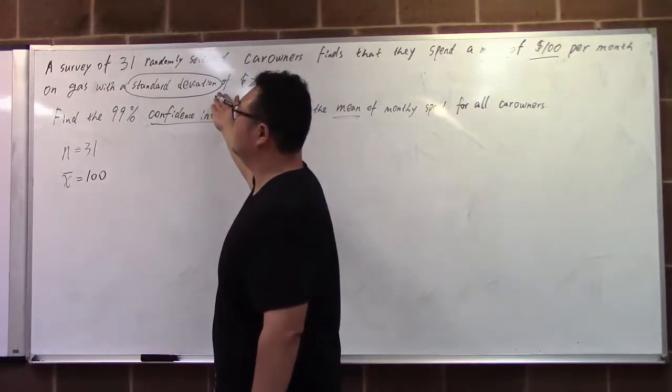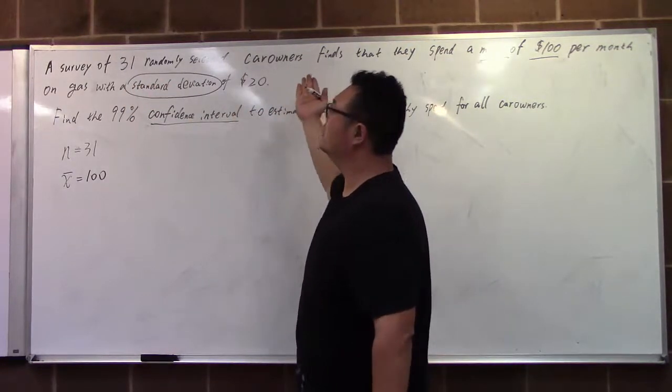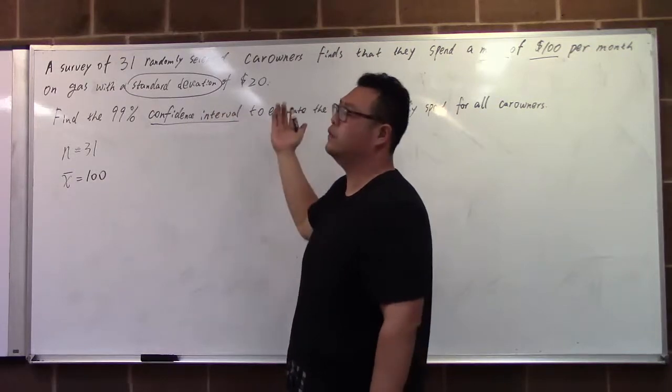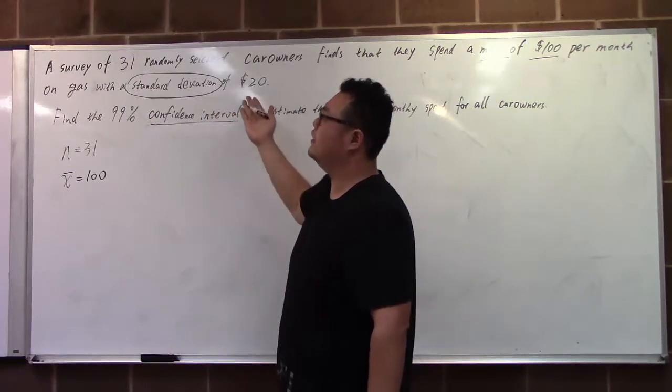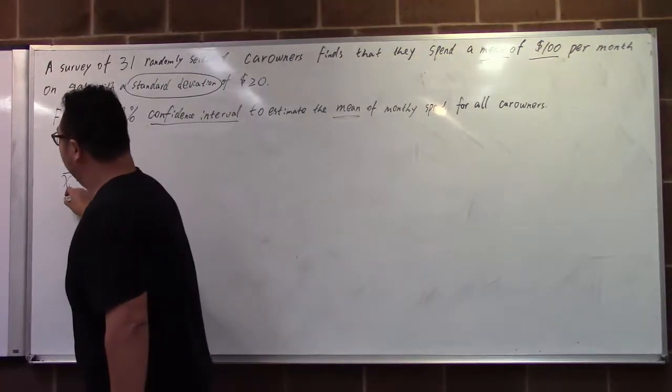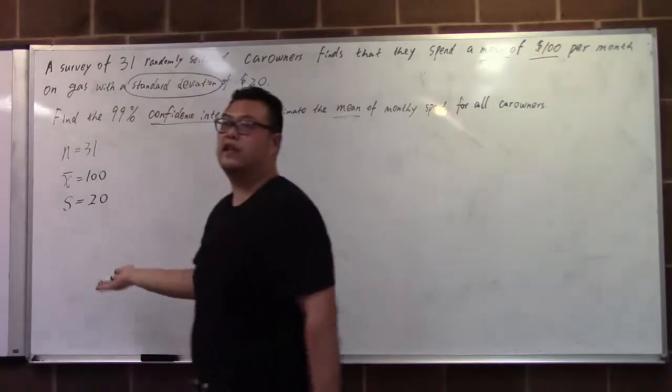That standard deviation, if we read through again, is from 31 car owners spending a mean of $100 with a standard deviation of $20. That standard deviation is coming from the sample of 31 car owners, which tells us it's the sample standard deviation.